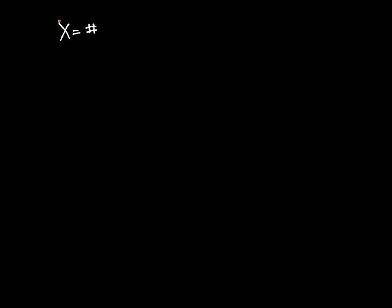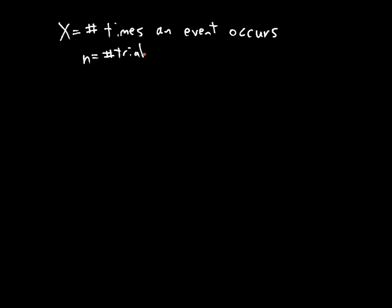Recall that if x is binomially distributed, then it gives the number of times that an event occurs. There are two parameters that go along with a binomial random variable: n is the number of trials, the number of opportunities for the event to occur, and p is the probability of an event in a single trial.